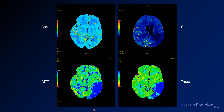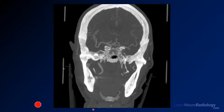Let's take a look at those — in perfusion, symmetry is your friend. Finally, you see some images from a MIP of a coronal CT angiogram through the head. Look to see if you find any areas of associated abnormality.